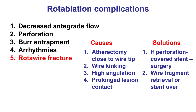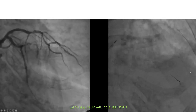Finally, the rotawire or the orbital wire can fracture. Factors predisposing to fracture include performing atherectomy close to the tip of the wire, atherectomy over a kinked guide wire — which is why if the wire kinks it should be removed and replaced — performing atherectomy in tortuous angulated lesions, and having prolonged lesion contact. If fracture occurs and perforation results, which is common, a covered stent or surgery is needed as these are massive perforations requiring immediate treatment. If perforation does not occur, the wire fragment can sometimes be retrieved or a stent can be placed over the wire.